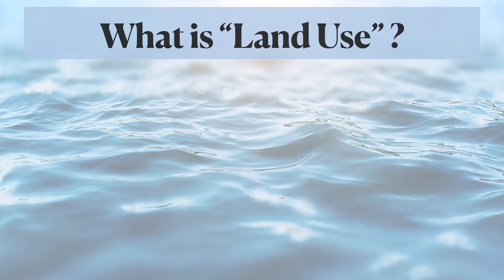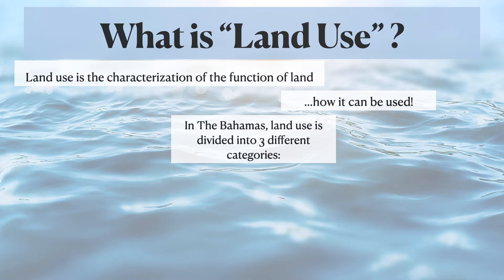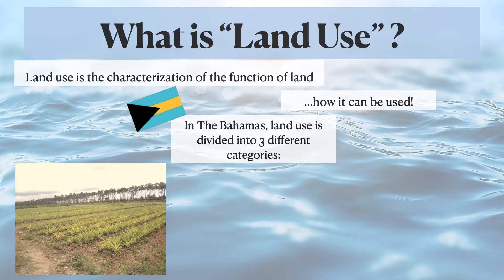What is land use? Land use is the characterization of the function of land and how it is used. People can adapt certain areas of land to suit their needs, but the natural land determines what it can be used for — i.e., if it is suitable for a community, a development, an environment, or otherwise. According to Index Mundi, a comprehensive data portal, the Bahamas' land use is divided into three different categories based on the terrain of the land: agricultural land, forest, and other.